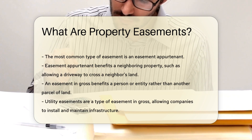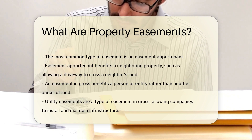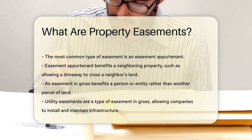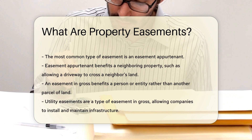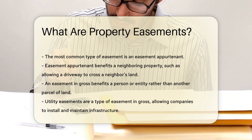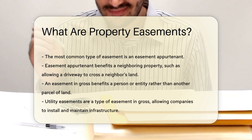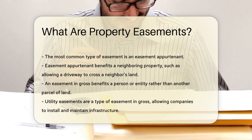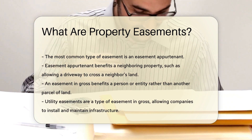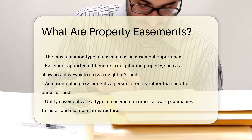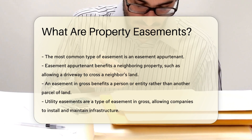Another type is an easement in gross. This does not benefit another parcel of land; instead, it benefits a person or entity, like a utility company. Utility easements allow companies to install and maintain infrastructure.